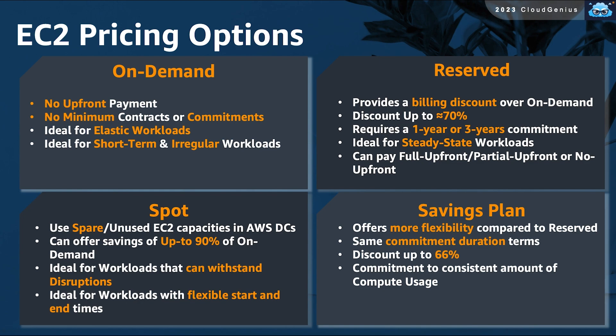If you need this discount and can make the same long-term commitments, but need more flexibility in your computing choices during that commitment period, then there is another model known as the savings plan. With a savings plan, you commit to a certain minimum amount of computing usage per month and have the ability to change your instances, their sizes and types, within the limits of your plan and get a discount of up to 66%.